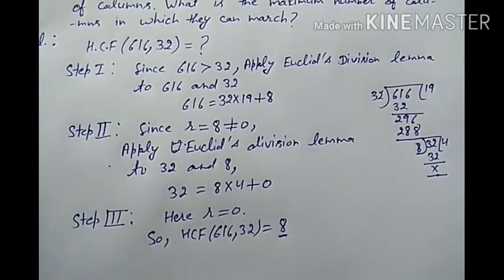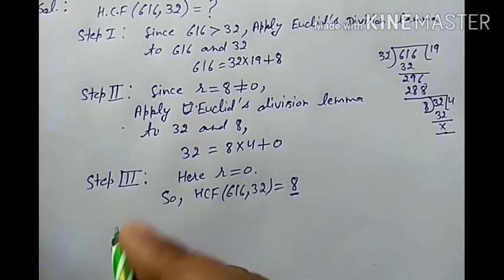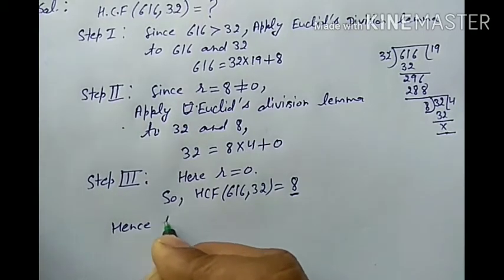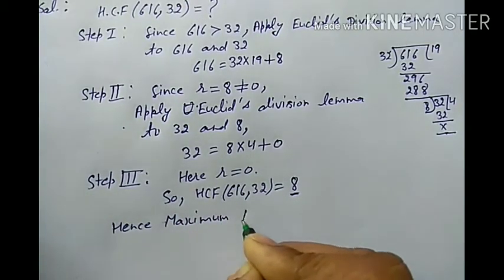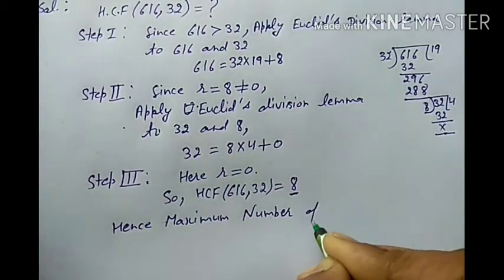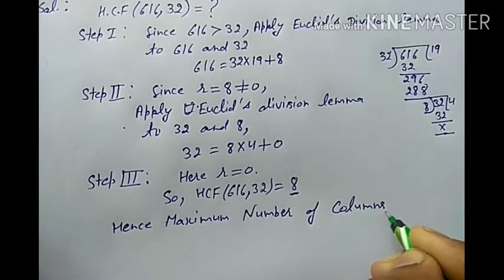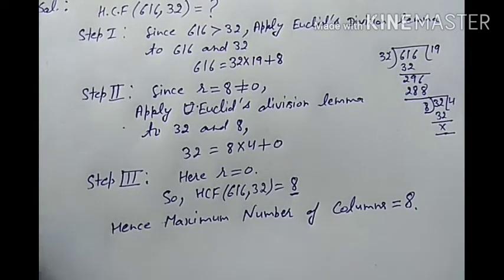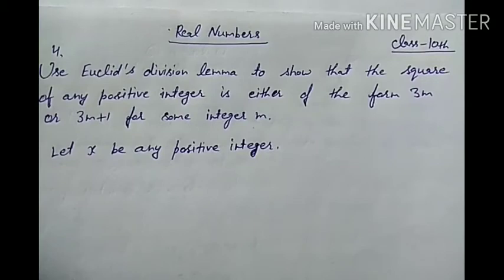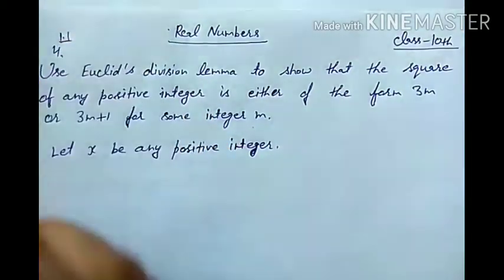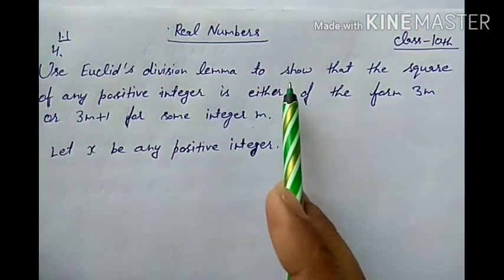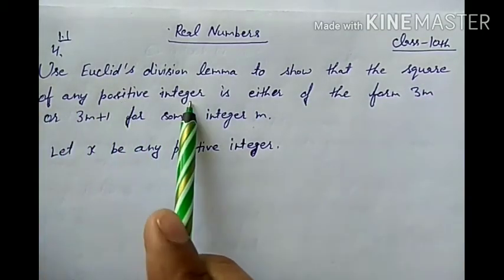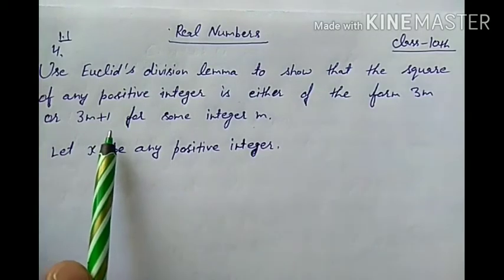So 8 is the maximum number of columns. Hence, the maximum number of columns is equal to 8. In 8 columns the army will march. Now we will do one more problem also based on Euclid's division lemma. That is question number 4 of exercise 1.1: use Euclid's division lemma to show that the square of any positive integer is either of the form 3m or 3m plus 1 for some integer m.